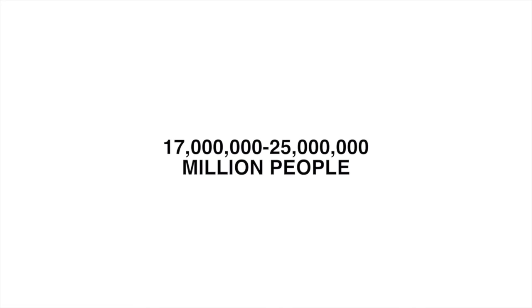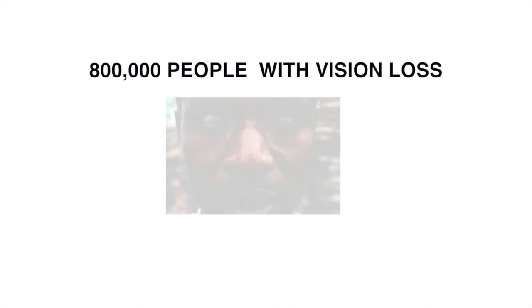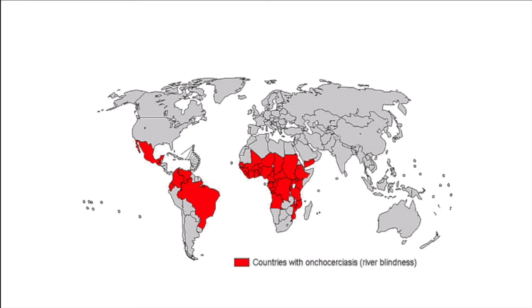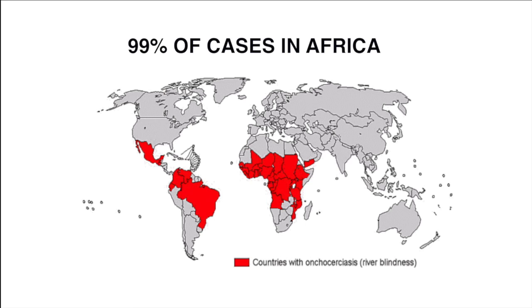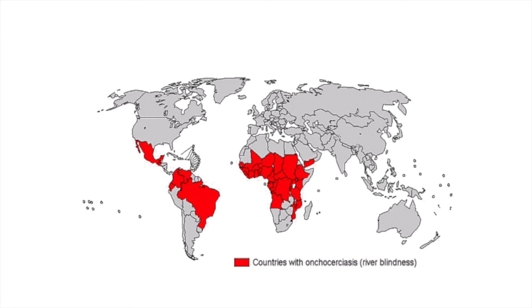Somewhere around 17 to 25 million people are infected with Onchocerca volvulus, and around 800,000 experience some loss of vision. Complete blindness is reported in about 300,000 of those cases. River blindness is endemic in 30 African countries, in Yemen, and in some South American countries, but 99% of river blindness cases have occurred in Africa. This disease is much more severe along major rivers. According to the World Health Organization, river blindness has not caused a single death. It is, however, a very debilitating disease.